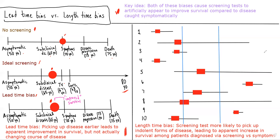Let's contrast this with the length time bias. Here we see the clinical course of 10 different patients with a disease, and the red box denotes when they develop symptoms related to that disease. We see that there are varying ranges in terms of the time course. Some people, like patient number nine, get the disease, get symptoms and die very quickly, whereas there are individuals like number five who have a very long, indolent course. One key concept is that screening tests really need to be conceptualized as a form of cross-sectional sampling, meaning we're looking at one single point in time and saying who has disease and who doesn't have disease.